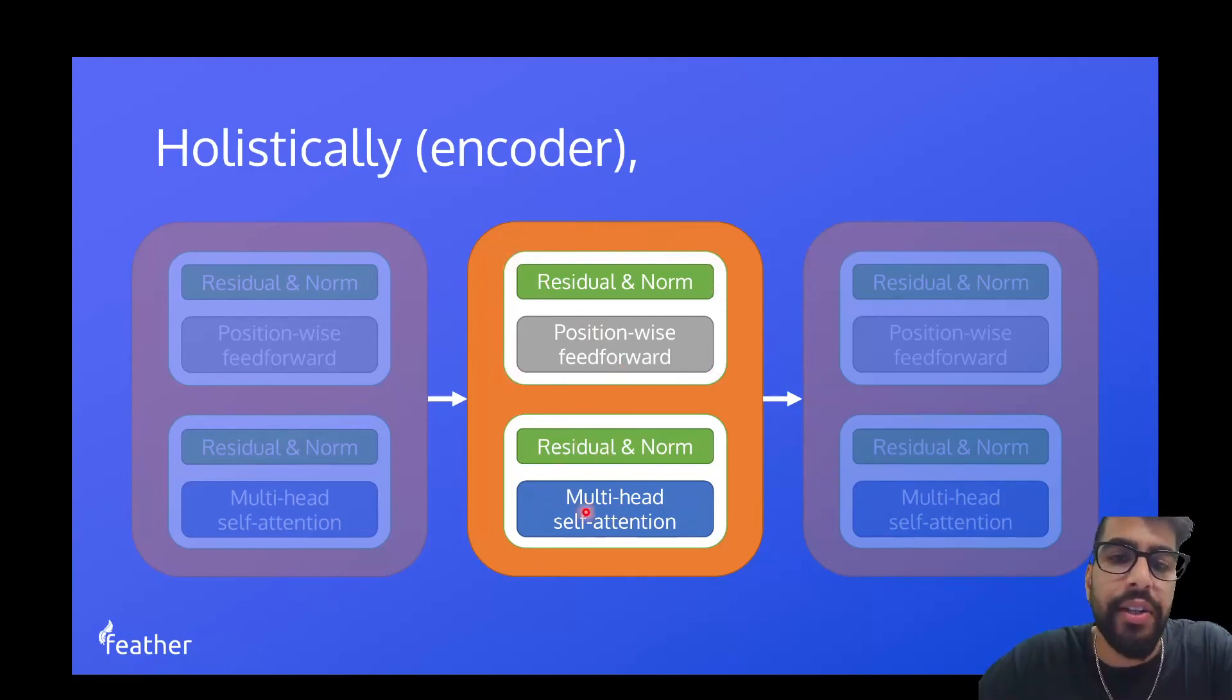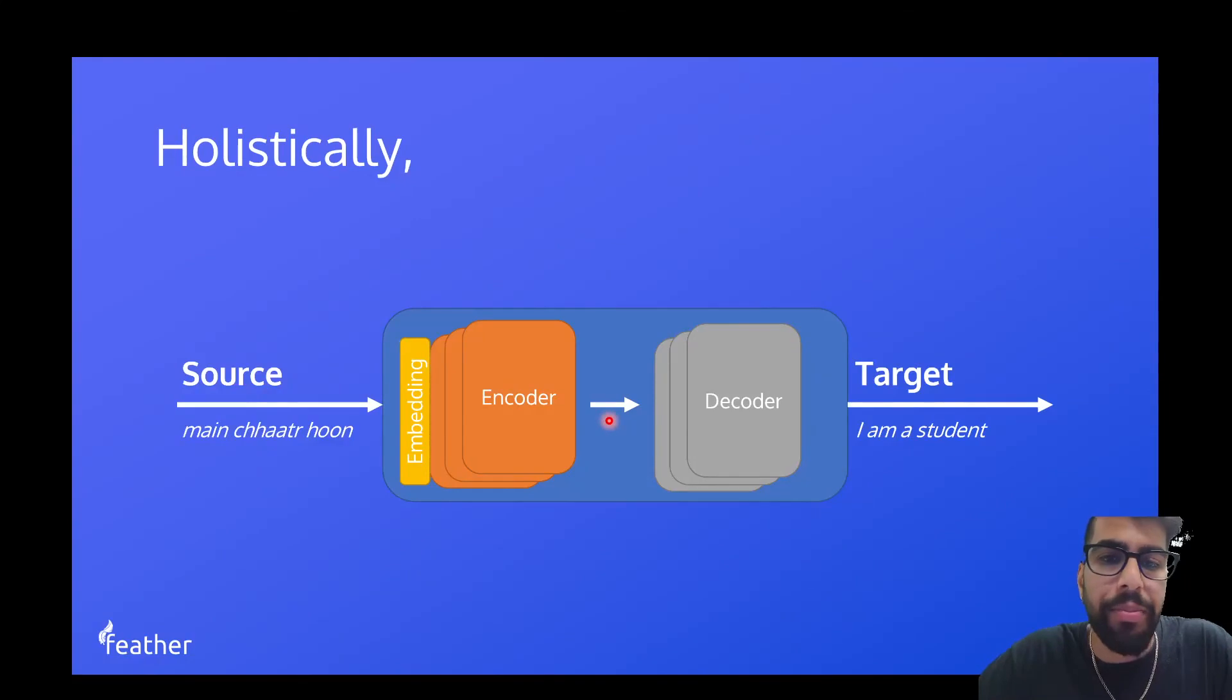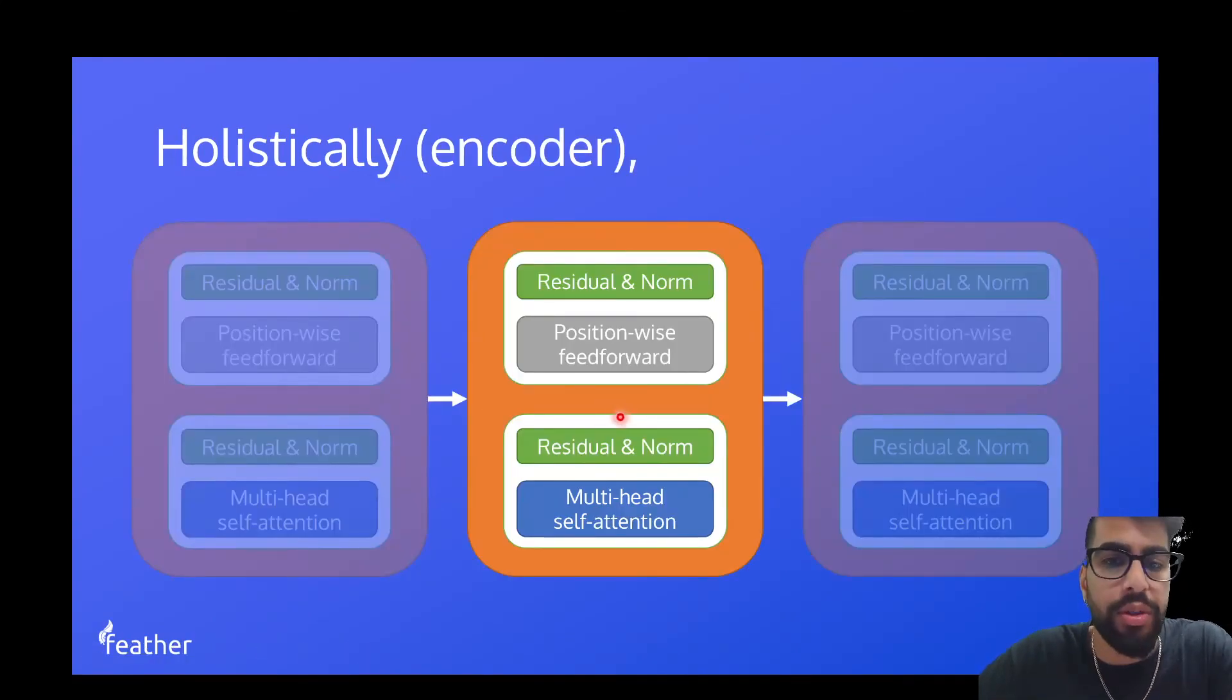Okay, now in the first sub-layer we have something known as multi-head self-attention, which is the core of how transformers actually work. So we'll be spending some time on that. And then after the multi-head self-attention, we have something known as a residual layer normalization, and that sounds a lot more complicated than it actually is, but again, we'll be looking into that over the course of the next couple of videos.